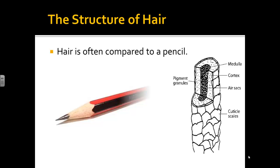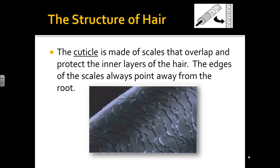Let's look at the structure of hair. It is often compared to a wooden pencil. We've got different layers. The cuticle is the outer part of the hair — like the paint on the outside of the pencil. It is made with scales, kind of like those Pantene commercials that show you the scales, and they protect the hair. The scales always point away from the roots, so if you only find part of the hair, you can tell which way it came from.